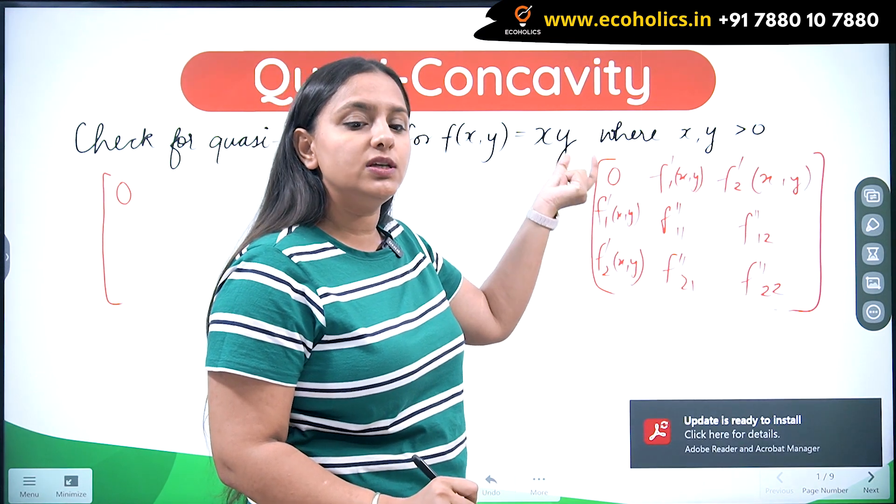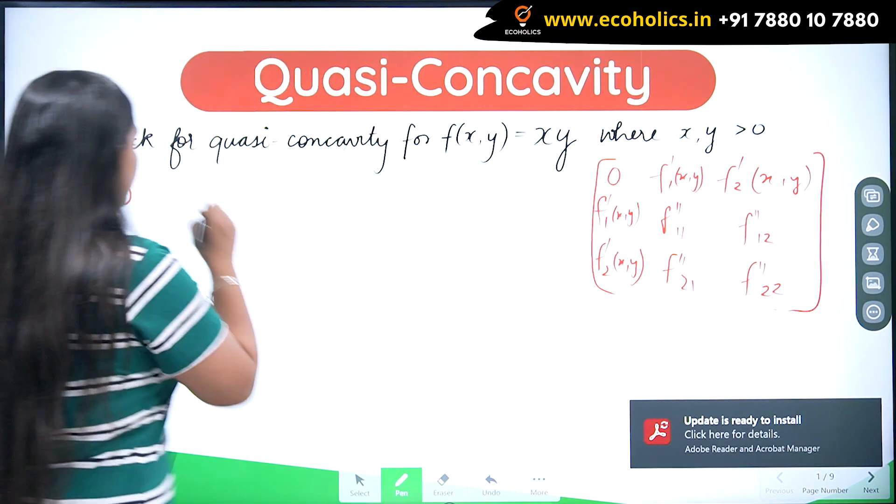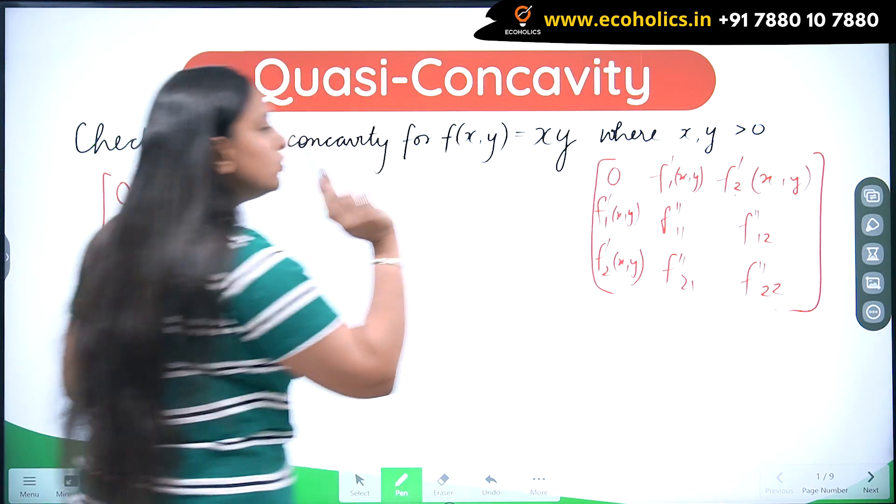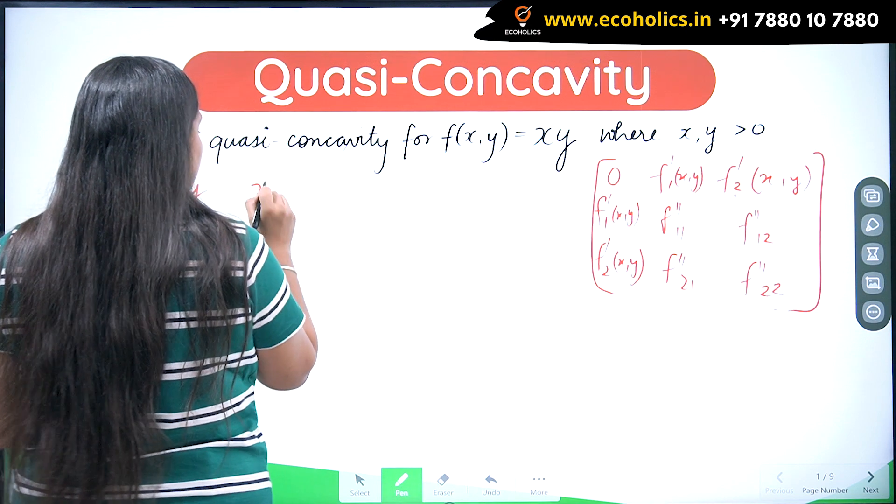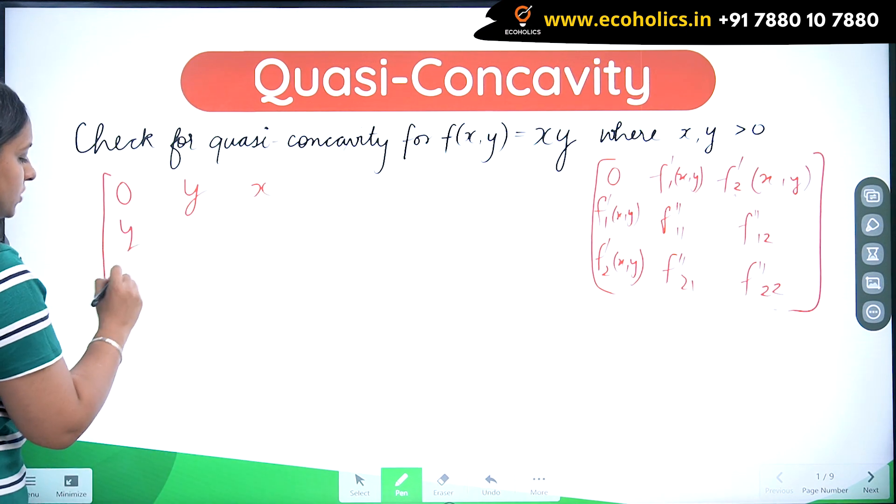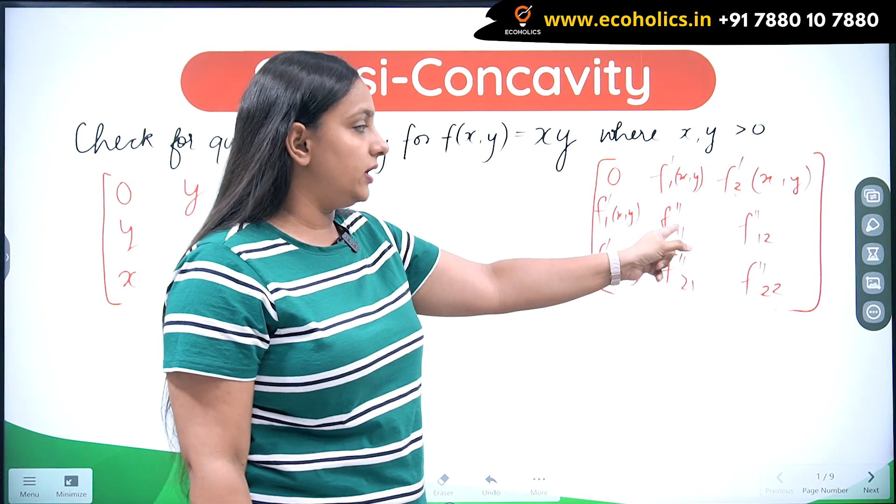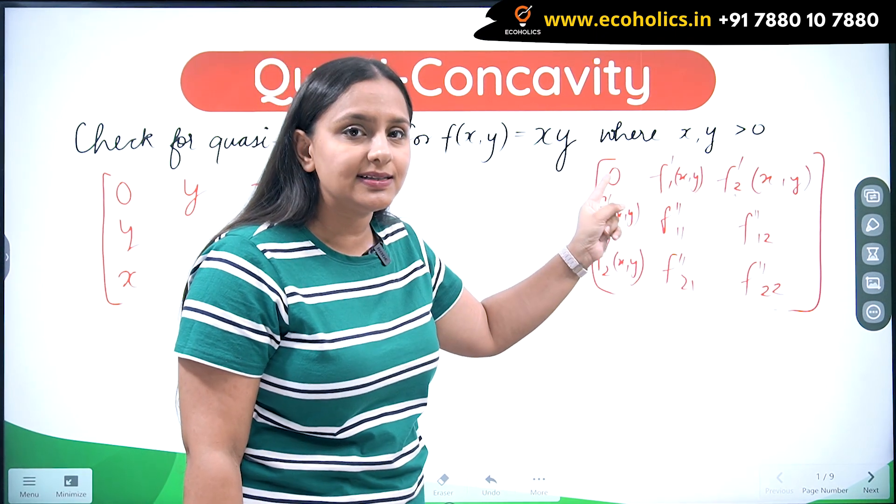Similarly, what would be the first order derivative with respect to the second variable? It would be x only, so same values. I'm going to put here. Now I want to find the first order derivative with respect to the first variable, that is x, but second order also with respect to first variable, that is x only.